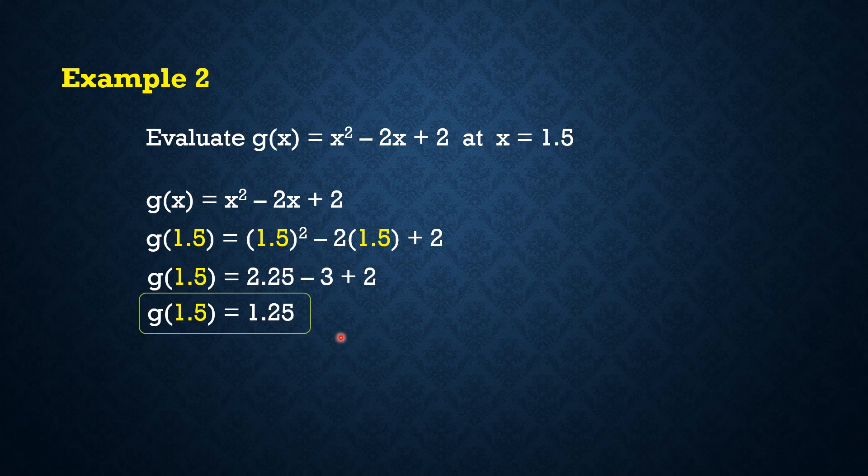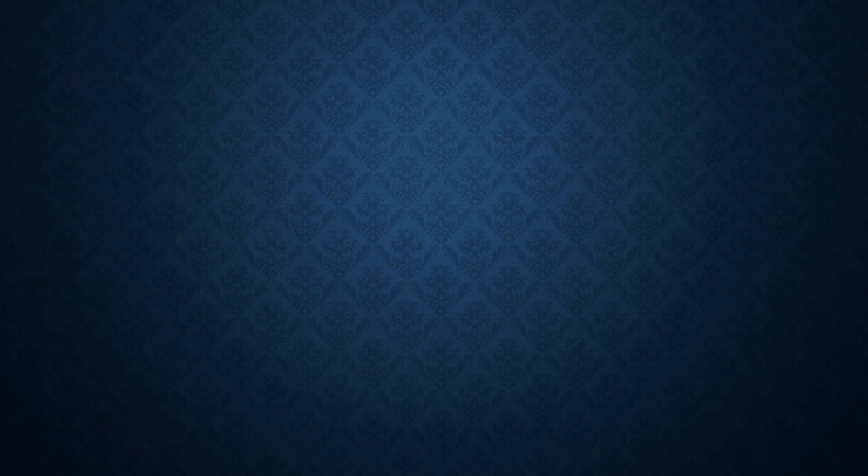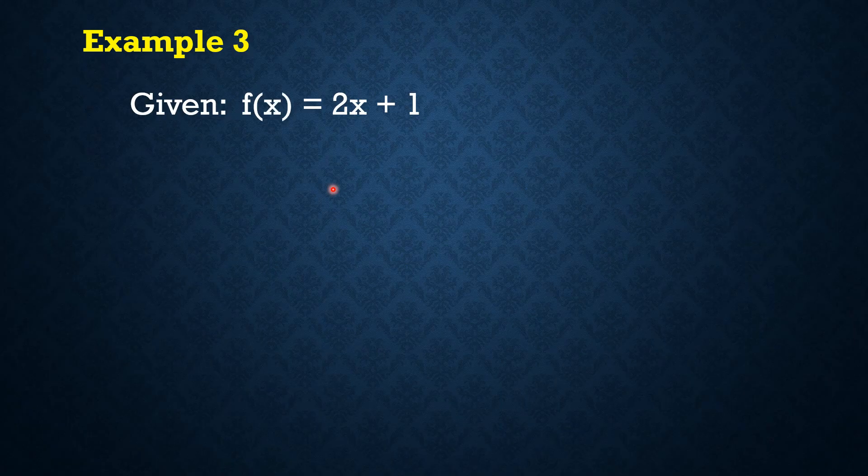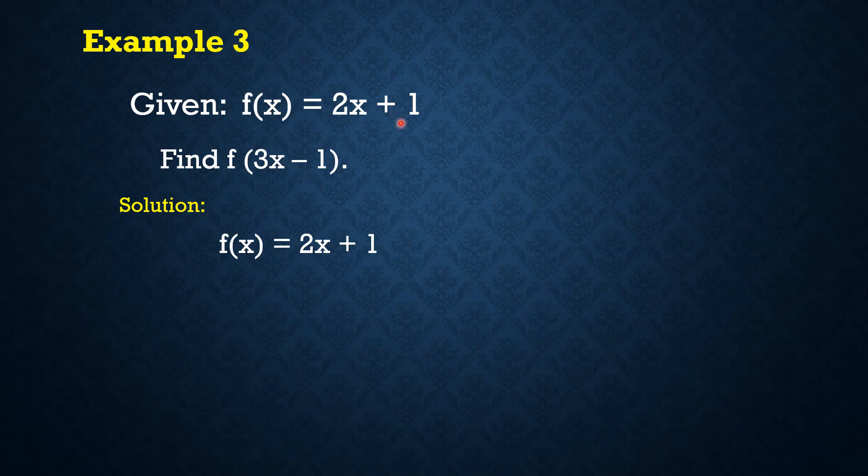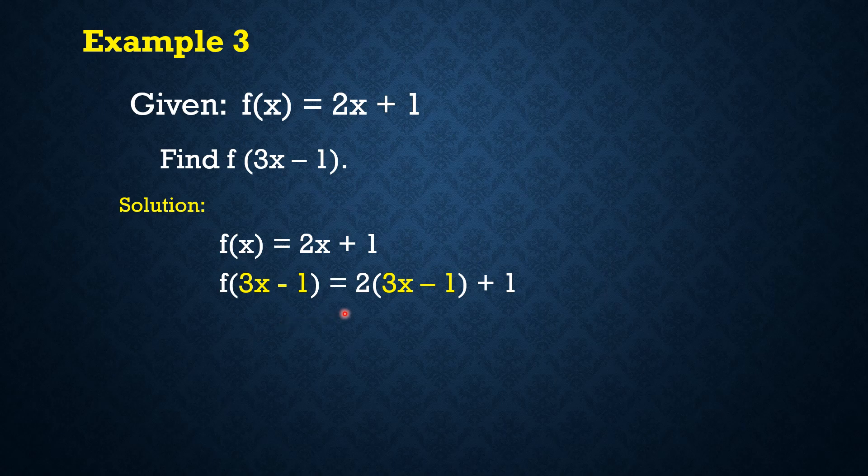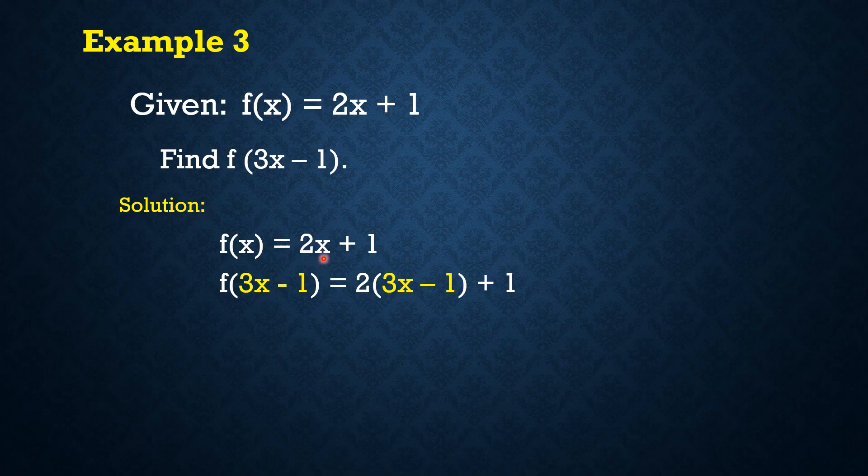Take a look at the next example to see a more complex or complicated example. Let's say given the function f(x) = 2x + 1, let's find f(3x - 1). So to find f(3x - 1), we just need to substitute 3x - 1 to every x na nandoon sa ating function. So f(3x - 1) = 2 times (3x - 1) + 1. So take note here, ito yung x natin, pinalitan natin ng 3x - 1.